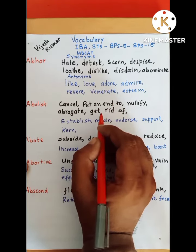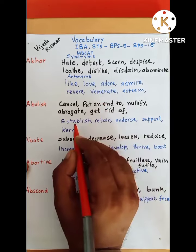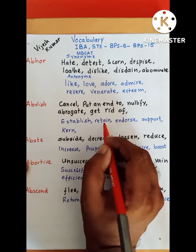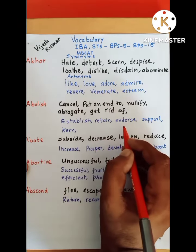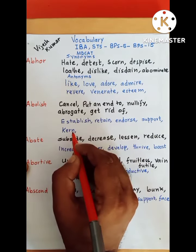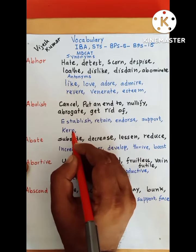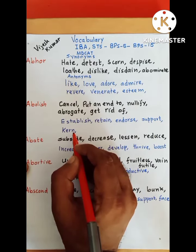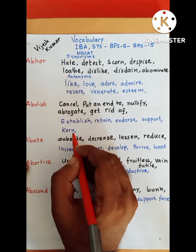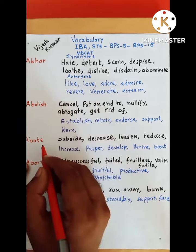And its antonyms are establish, retain, endorse, support. Abolish means cancel something and establish means to set something on. Next is abate.